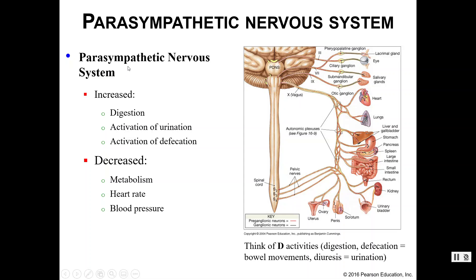If we are using our parasympathetic division — resting and digesting — the following will be increased: digestion, urination, defecation. All those things that we decreased with your sympathetic nervous system — we didn't have time to digest our lunch, we didn't have time to go to the bathroom — now we have time to do all that because we're resting and digesting. So increasing these means we're decreasing all the other things we just increased.